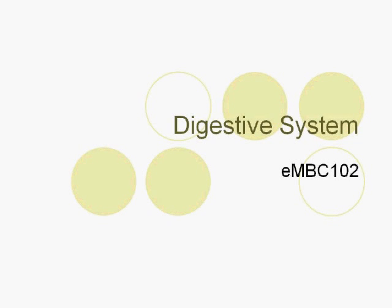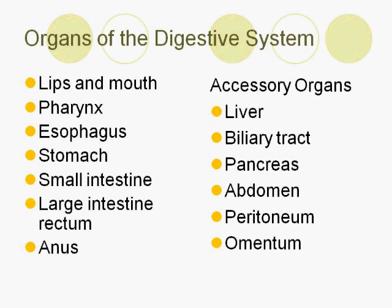The Digestive System. The organs of the digestive system that are directly involved in digestion are the lips and mouth, pharynx, esophagus, stomach, the small and large intestine, the rectum, and the anus. The accessory organs, such as the liver and pancreas, aid in digestion.